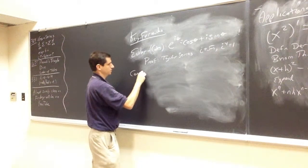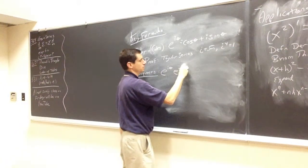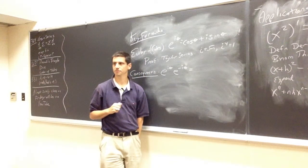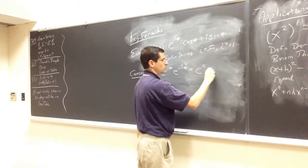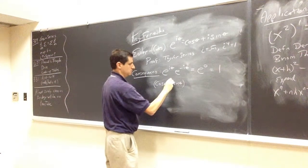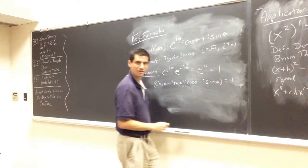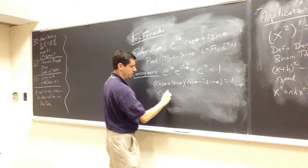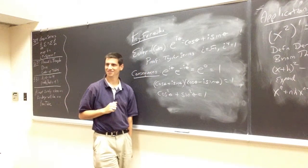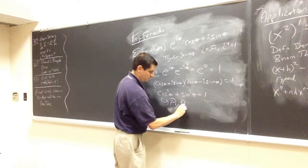This is an extremely useful formula. Consequences: e to the i theta times e to the minus i theta equals e to the 0, which is 1. But this is the same as (cosine theta plus i sine theta)(cosine theta minus i sine theta) equals 1. When you expand, you get cosine squared theta plus sine squared theta equals 1.